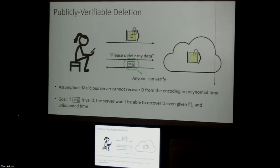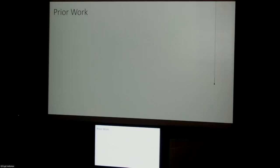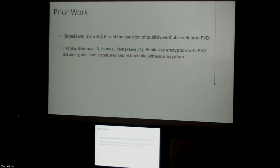This property of publicly verifiable deletion was first raised in the work of Broadbent and Islam. They construct a privately verifiable certified deletion scheme, but somewhere in the intro they ask whether we can construct publicly verifiable deletion. The work of Hiroka, Morimae, Nishimaki, and Yamakawa gave the first feasibility result — they construct a public-key encryption scheme with PVD, but they assume really strong assumptions like one-shot signatures and extractable witness encryption. These are non-standard assumptions that we only have candidates for right now.